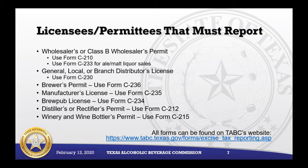Licensees and permittees that must report: Wholesalers or Class B Wholesalers permit will use Form C-210. Use Form C-233 for ale and malt liquor sales. General, local, or branch distributor licenses will use Form C-230. Brewer's permits will use Form C-236. Manufacturer licenses will use Form C-235. Brewpub licenses will use Form C-234. Distillers or rectifiers permits will use Form C-212. Winery or wine bottler permits will use Form C-215. All forms can be found on the TABC's website.